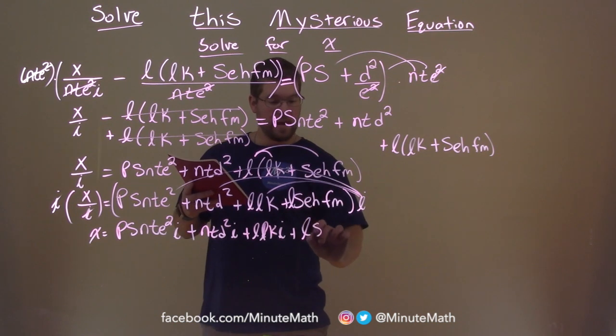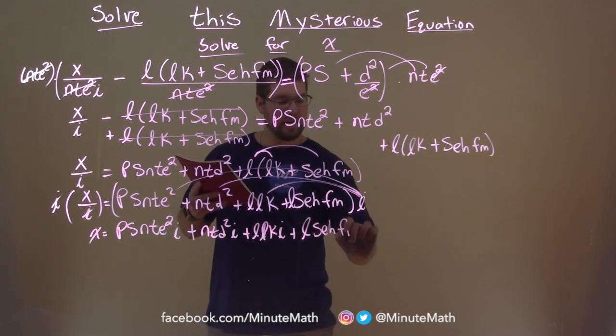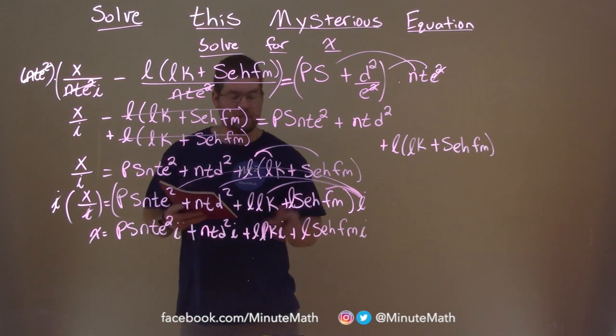Plus lastly, we have l, s, e, h, f, m, i. Distribute the i to the last part here.